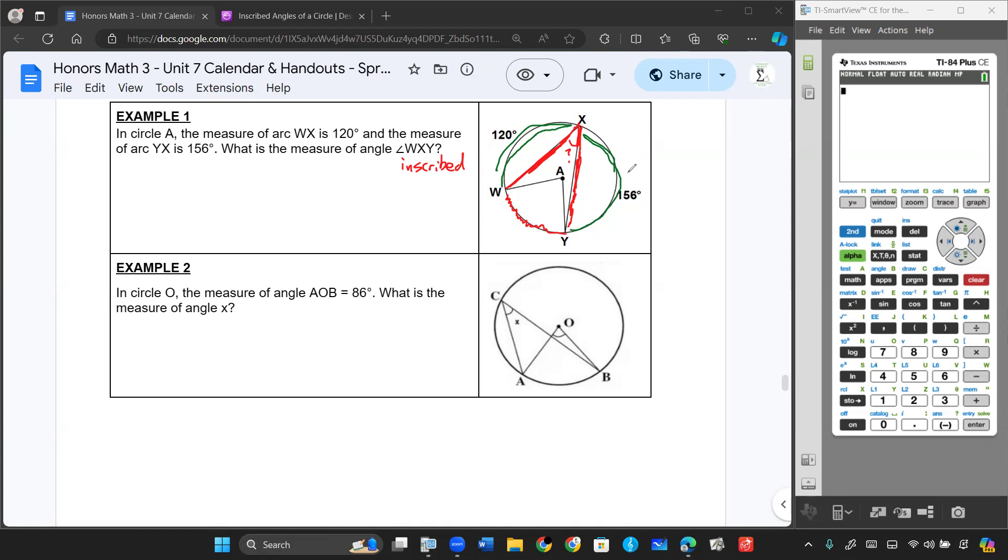And so to get that arc, you got to think about all around the circle, how many degrees total can we work with? That's going to be 360. So I'm going to take that, we'll call this 120 plus 156. Add those together, and then I'm going to subtract that from 360 to get what that arc equals.